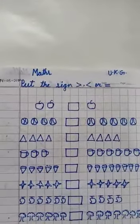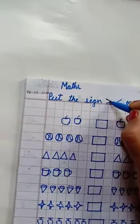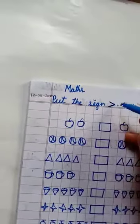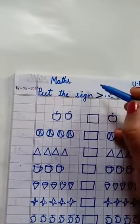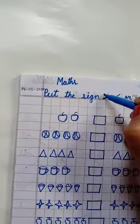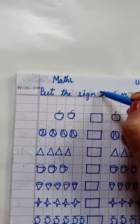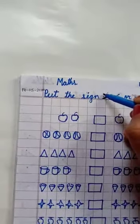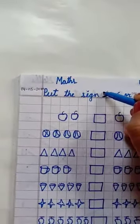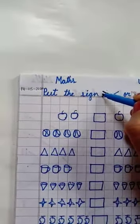Greater than, less than, or equal to. Either this is the arrow. This is the side which is the other side, which is far.